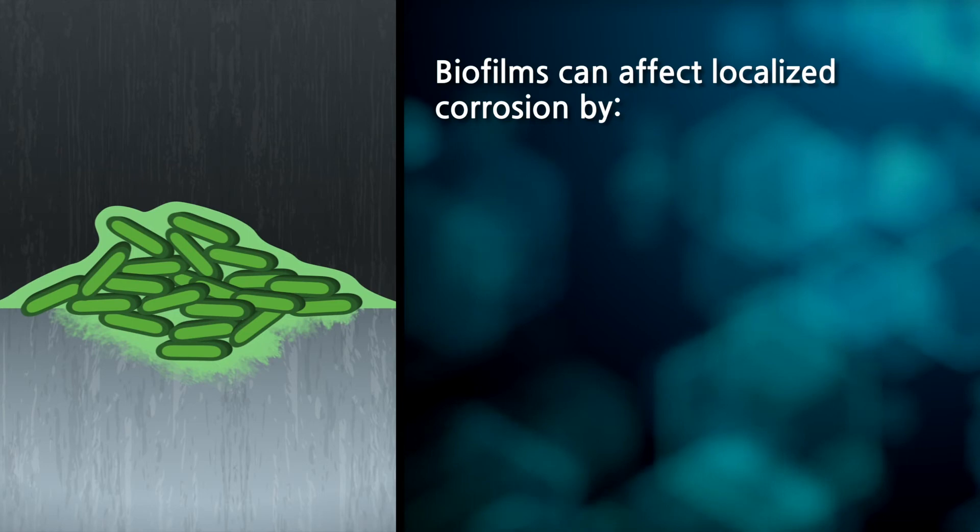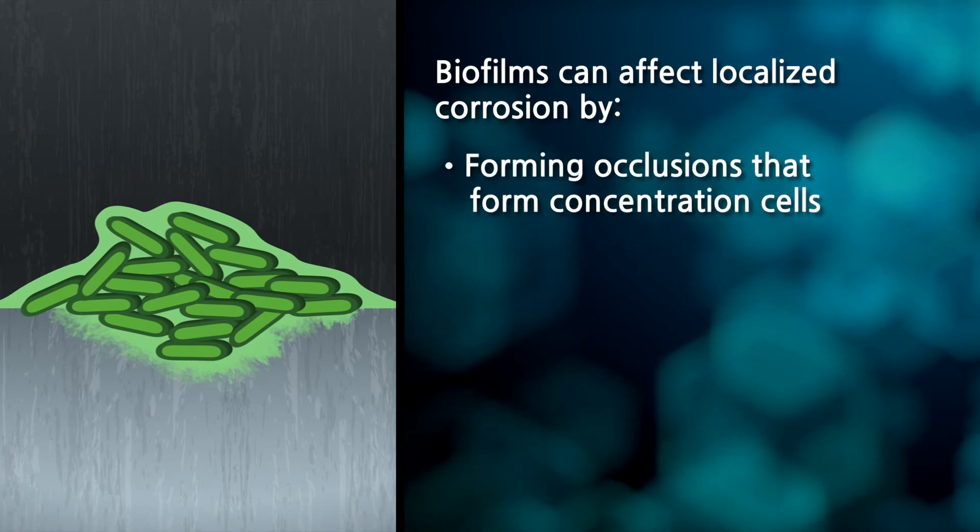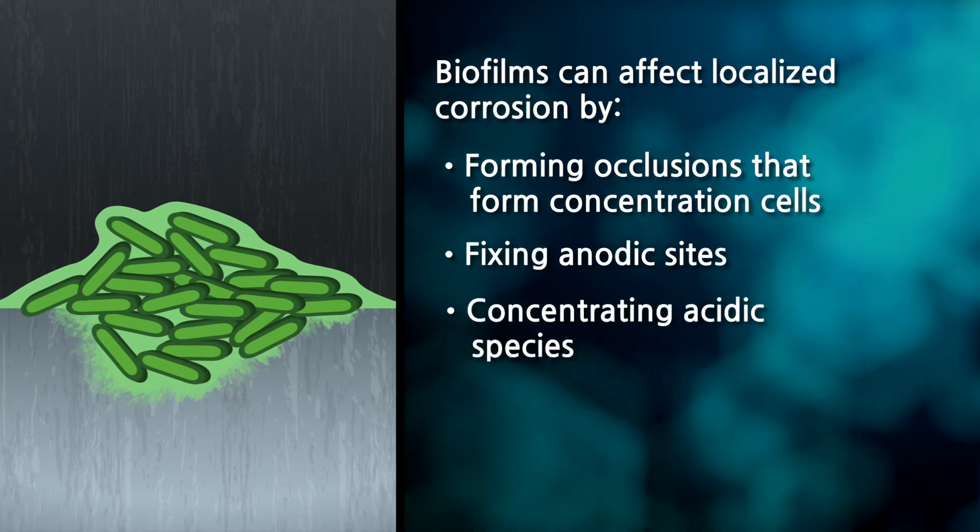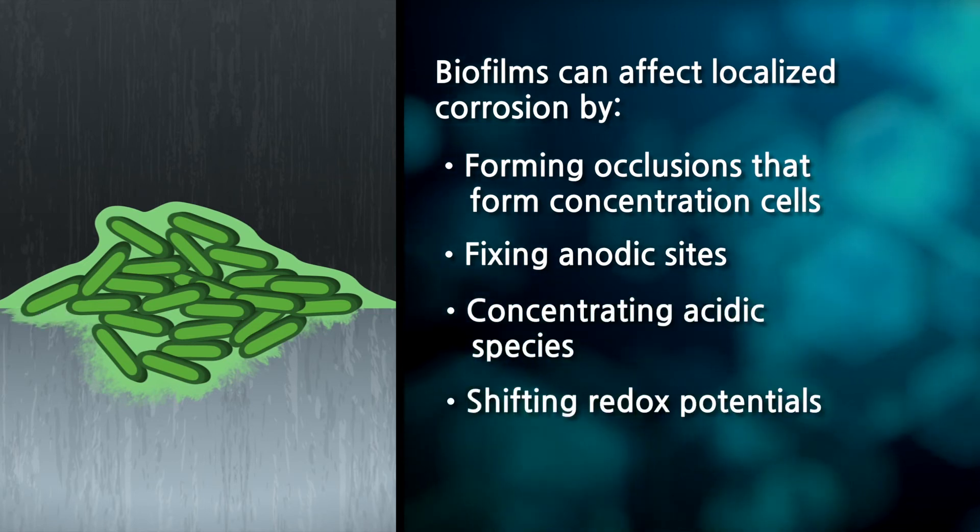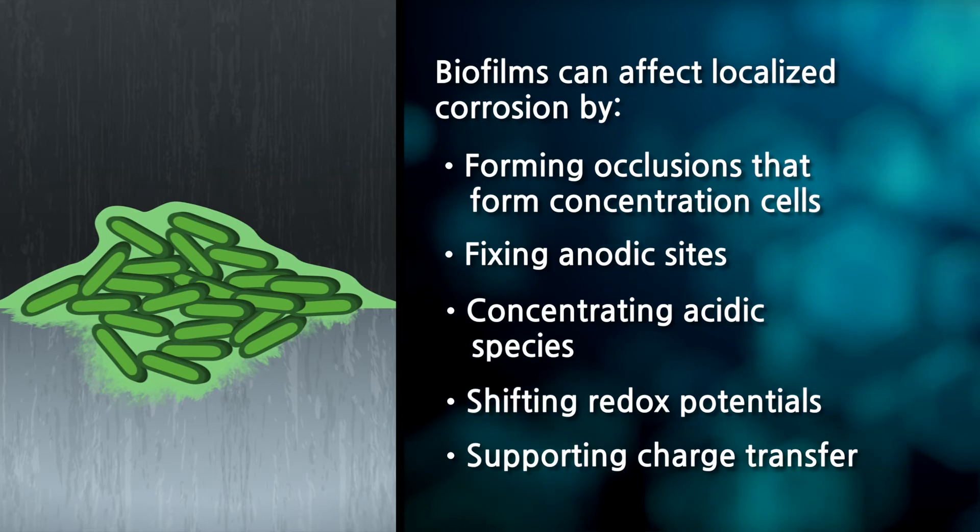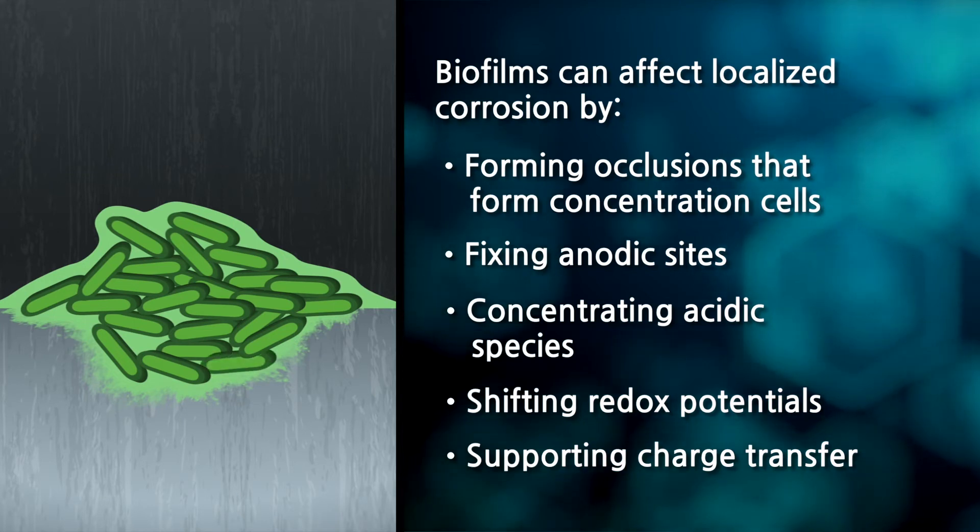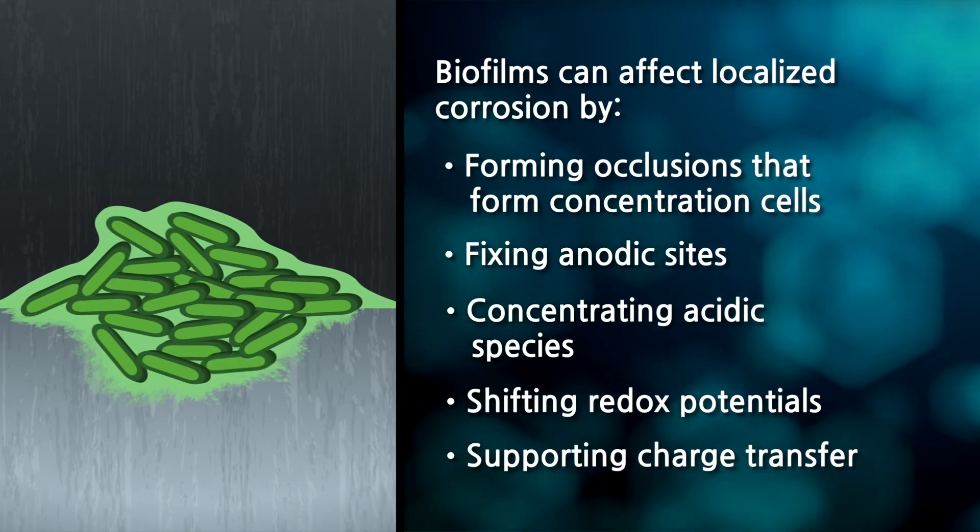Biofilms can affect localized corrosion by forming occlusions that promote concentration cells. Biofilms can also fix the position of anodic sites, concentrate acidic species, shift redox potentials, and support charge transfer between anodic and cathodic regions under the biofilm. The potential for MIC is therefore strongly based on the propensity for biofilm establishment and growth.